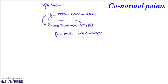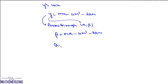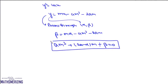Now we can rearrange this equation and express it as a polynomial in terms of m. So we can write this equation as am³ + (2a - α)m + β = 0, which is a cubic equation in m. So that simply means from a point, if we draw a normal to the parabola, we get a cubic equation in m.